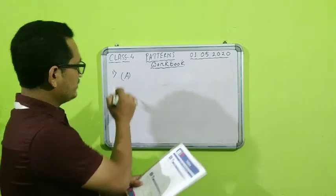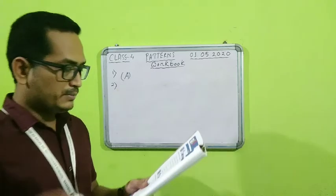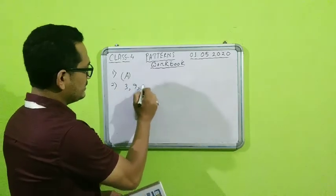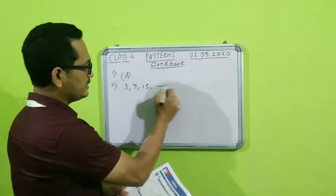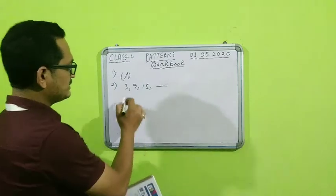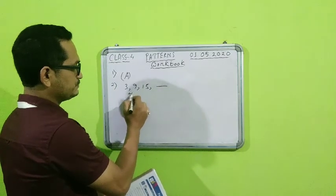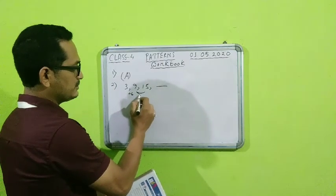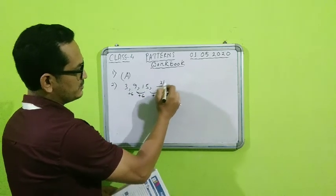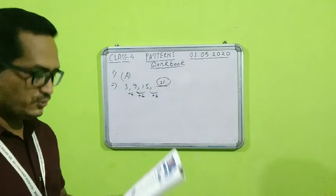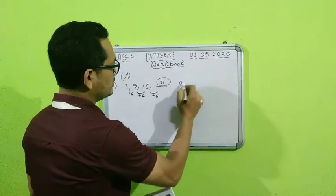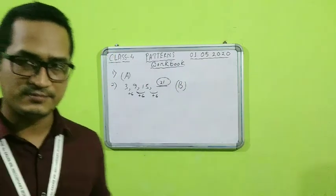Number two: find the missing number in the given pattern. The pattern is 3, 9, 15 — we need to find the missing number. If you see, it is increasing by 6 each time: 3 plus 6 is 9, then 9 plus 6 is 15, and 15 plus 6 will be 21. So option B — 21 — is correct for number 2.